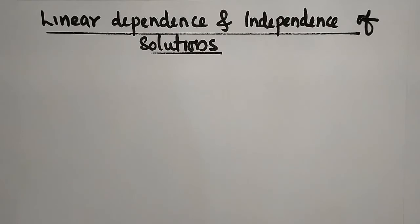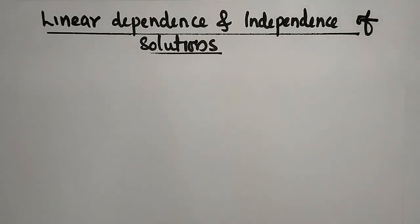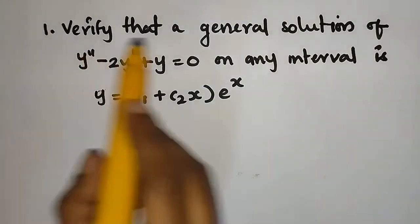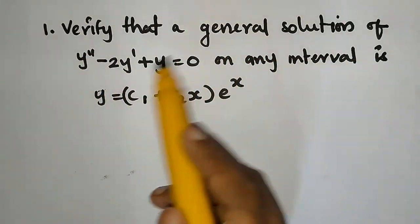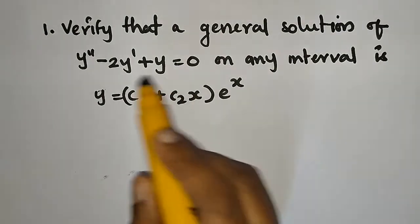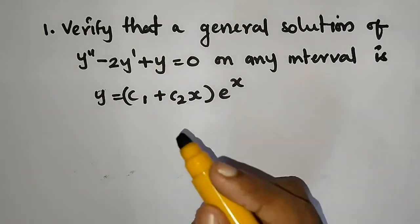This is another type of problem: Linear Dependence and Independence of Solutions. The question is: verify that a general solution of y'' - 2y' + y = 0 on any interval is y = (c₁ + c₂x)eˣ.